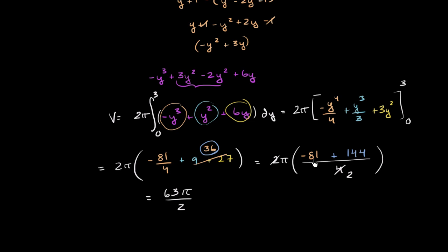Did I do that right? 60 plus 81 is 141. Add another 3, you get 144. Yep, and we're done.